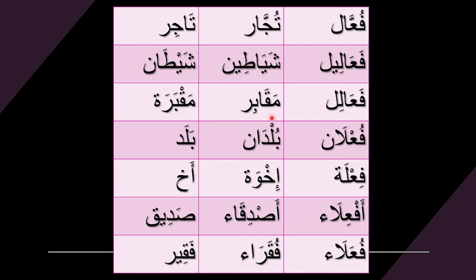Another pattern gives us bilad, meaning countries, from balad, meaning a country. Another gives us ikhwan, meaning brothers, from akh, meaning a brother. And another gives us asdiqa, meaning friends, from sadiq, meaning a friend.